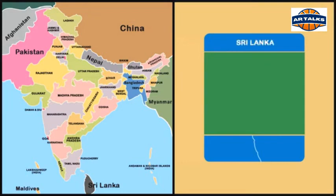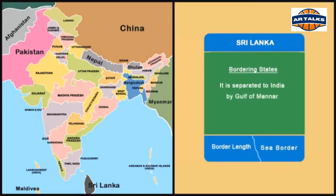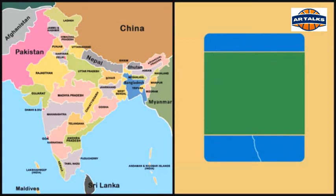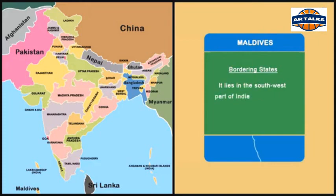Sri Lanka is separated from India by the Gulf of Manar. Maldives lies in the southwest part of the Indian Ocean, below the Lakshadweep island.